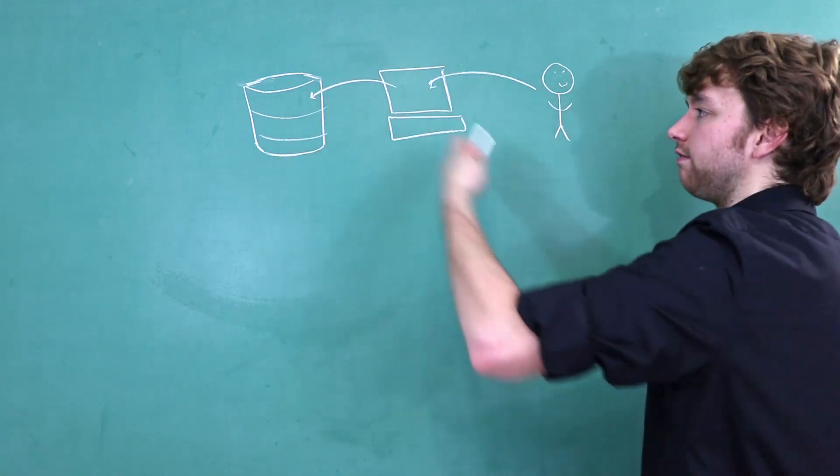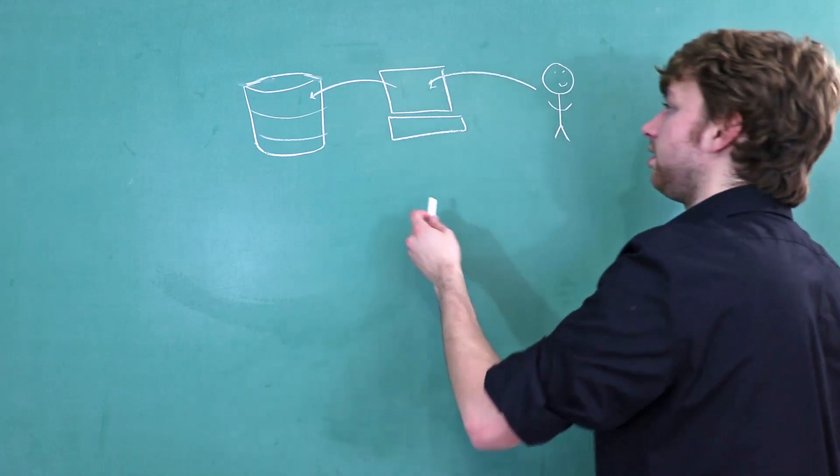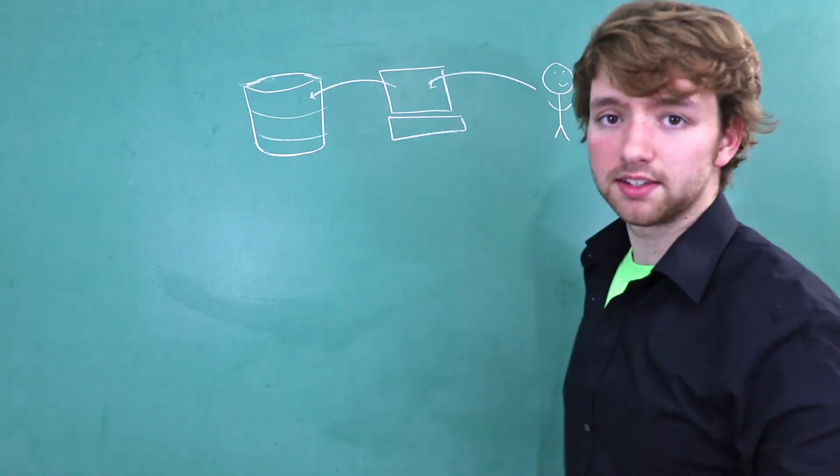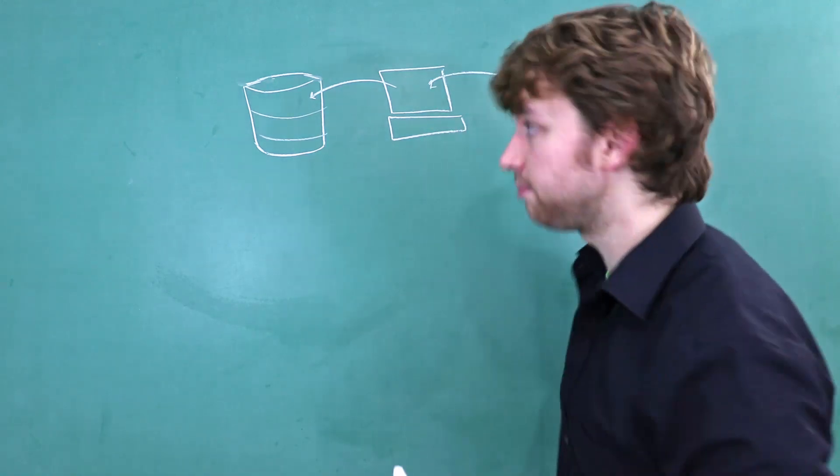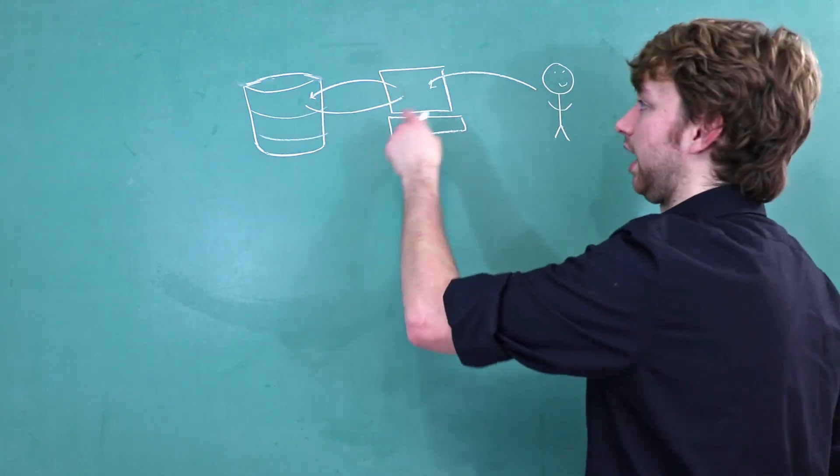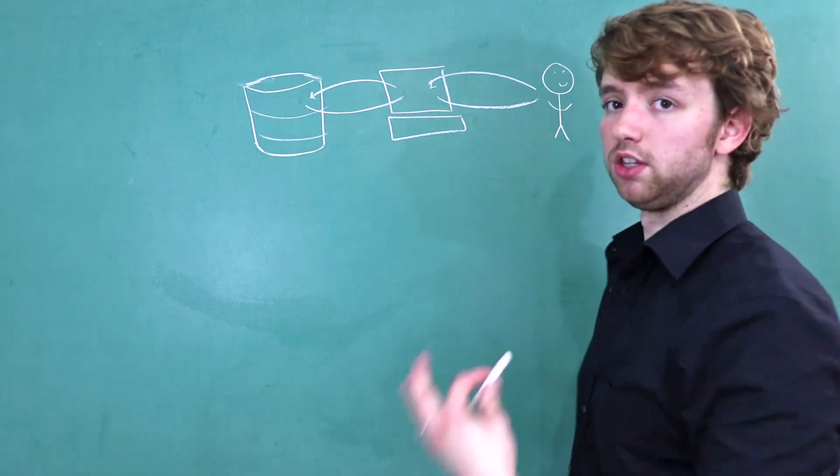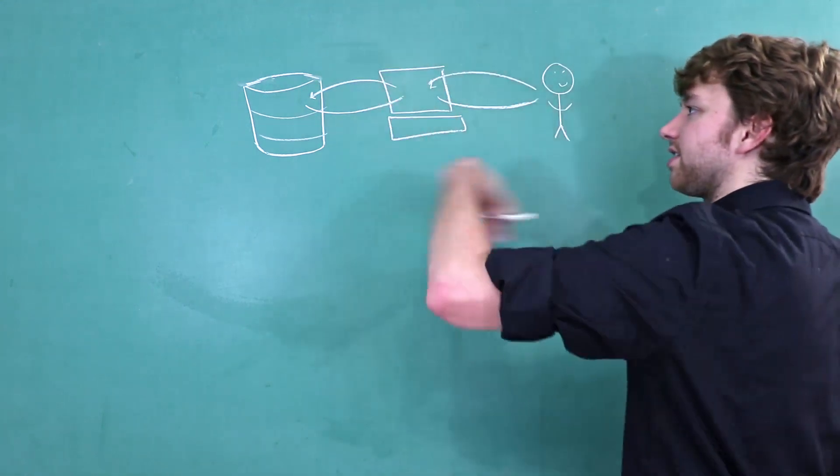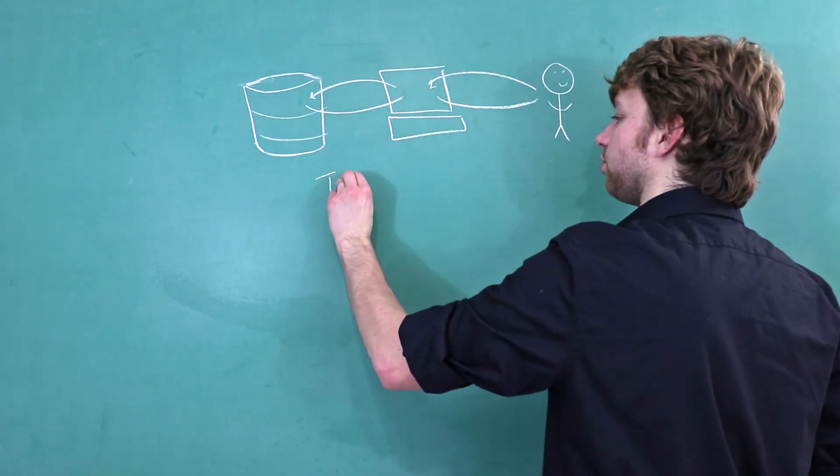So the database is usually hidden from the user. And then when this user comes back and accesses that application at a later time, we can actually get that information back from the database, display it on the application, which will be seen by the user. So this kind of setup here is good for transactional data.